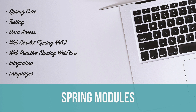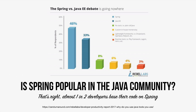Now let's look at a survey done by the folks at Rebel Labs to answer the question: is Spring popular in the Java community? Out of everybody they polled, almost 46% of respondents said they built their application code on the Spring Framework — that's almost one in every two developers basing their code on Spring. To me that's pretty astounding. It's obviously popular, it's not going anywhere, and it's something you should be learning if you want a job in this industry, because most companies are using it.